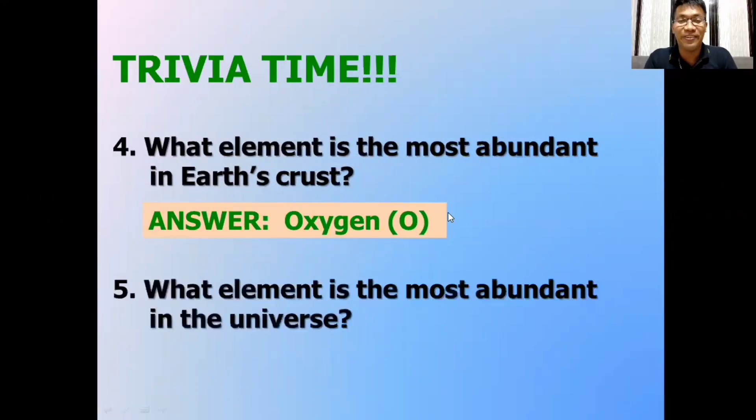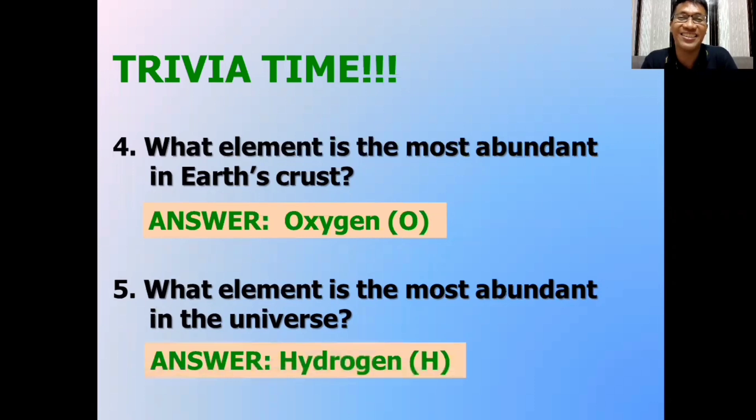Trivia number five. What element is the most abundant in the universe? The correct answer is hydrogen. Hydrogen is the first element in the periodic table. And in the universe, most of our stars are made up of? That's right. Hydrogen. And could you imagine how big a star is? It's like the sun. That's how big it is. So, it means that there are a lot of hydrogen present there. That's why it is the most abundant element in the whole universe.